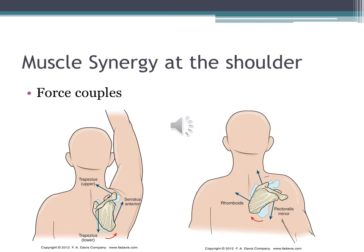In the pictures on the left side of the screen, we have upward rotation of the scapula and the muscles that operate in the force couple to produce that. On the right side, we have downward rotation and the muscles that work together to do that. For upward rotation, the force couple involves the upper trap, serratus anterior, and lower trap. For downward rotation, the levator scapula, rhomboids, and pec minor work together.